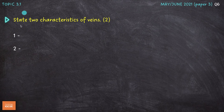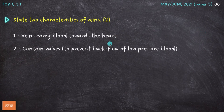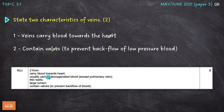Next question on topic 3.1: state two characteristics of veins. First, they carry blood towards the heart — arteries carry blood away from the heart, but veins carry it back. Second, they contain valves to prevent the backflow of low-pressure blood. The mark scheme also notes veins usually carry deoxygenated blood (except the pulmonary vein), and they have thin walls and large lumens.